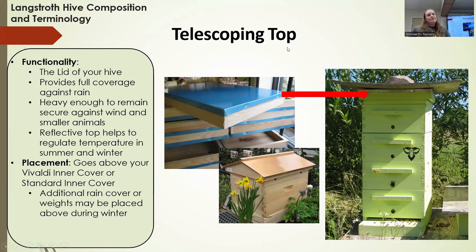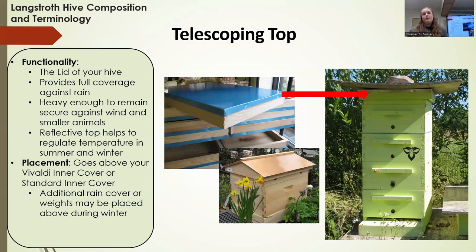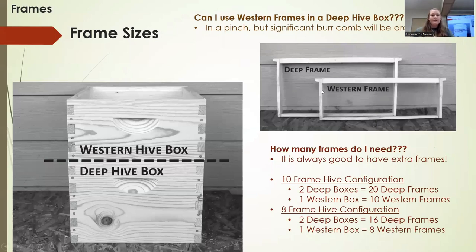Nearing the top, we're at the telescoping top — just the lid for your colony. It's called a telescoping top because your hive grows and shrinks as you add different components, so it telescopes and always remains on the hive. It's heavy, it encompasses the entire hive so it keeps rain off, and it can withstand the winds here in Corvallis. It also has a reflective top to help with temperature regulation. This always goes on top of your Vivaldi cover or standard inner cover.